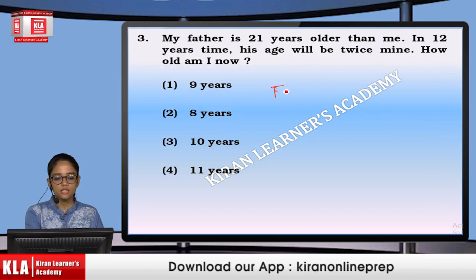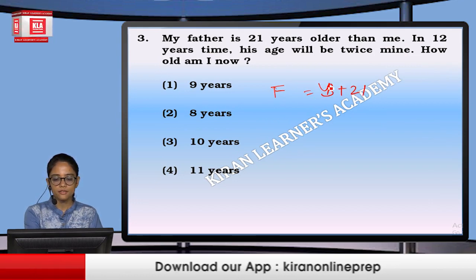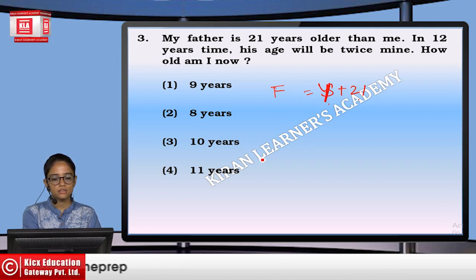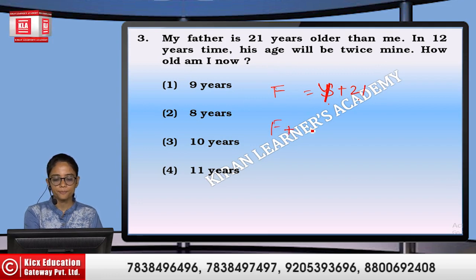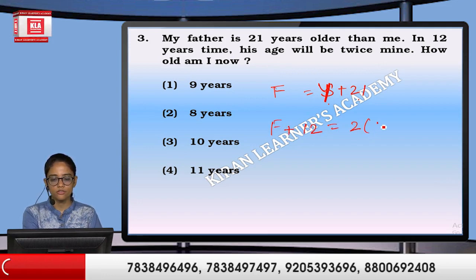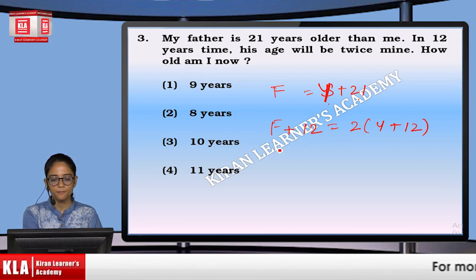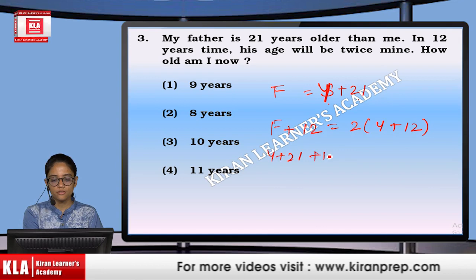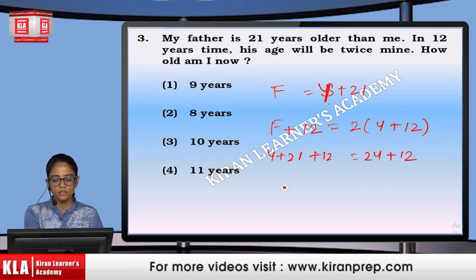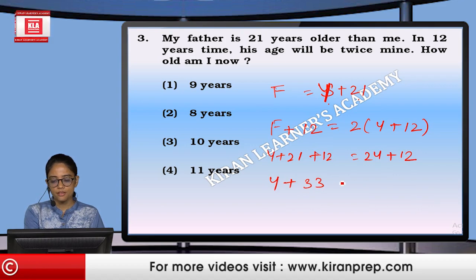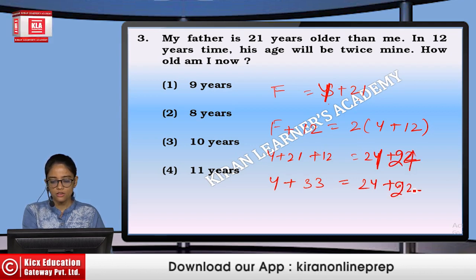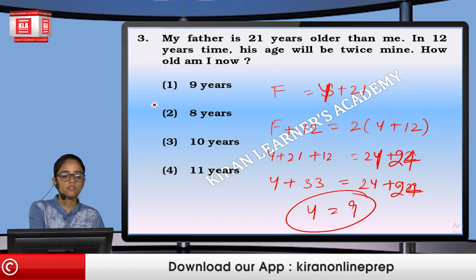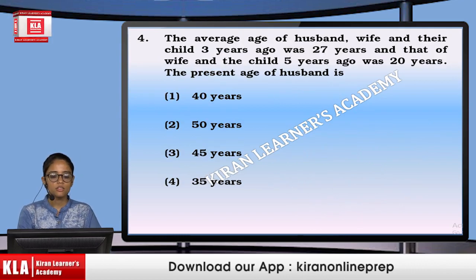My father is 21 years older than me. In 12 years' time, his age will be twice mine. That means F plus 12 equals 2 times (Y plus 12). So Y plus 21 plus 12 equals 2Y plus 12, giving Y plus 33 equals 2Y plus 12. Therefore Y equals 9 — you are now 9 years old.